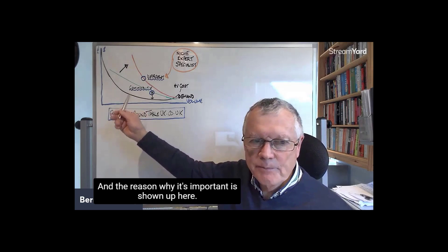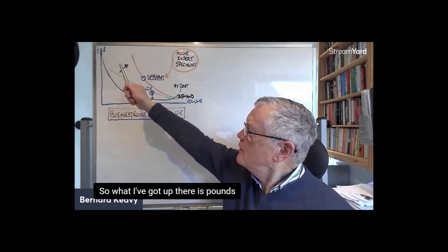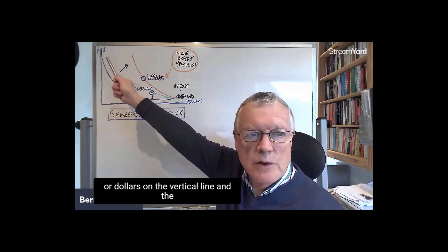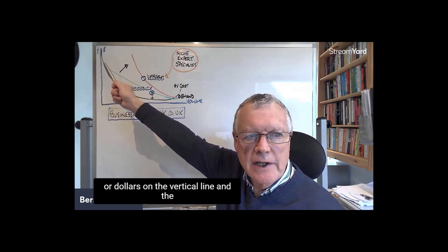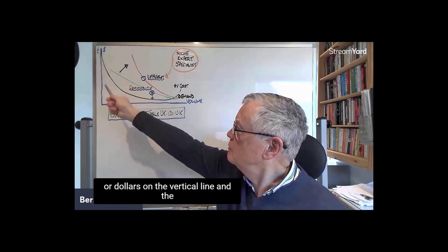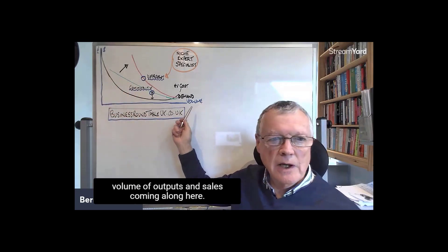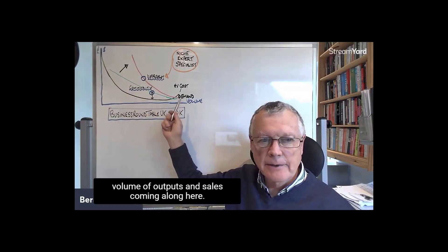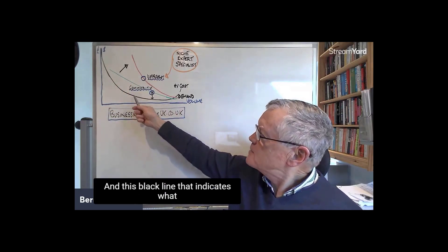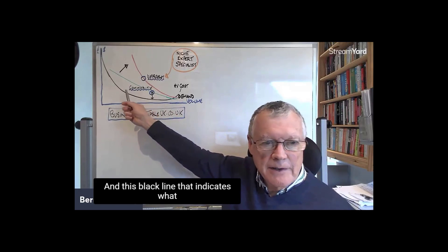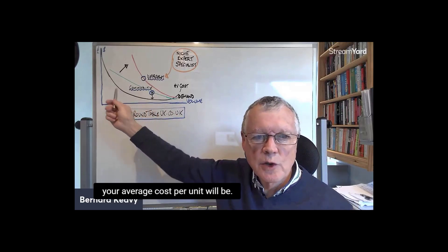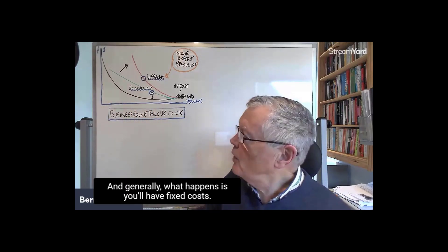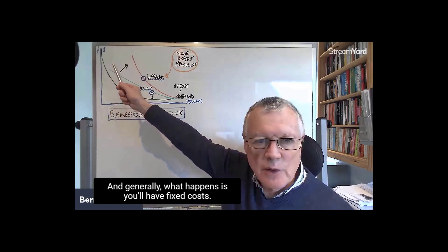What I've got up here is pounds or dollars on the vertical line and the volume of outputs and sales along the horizontal. This black line indicates what your average cost per unit will be.